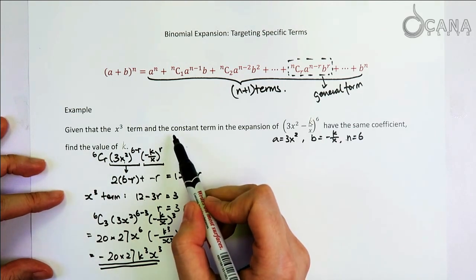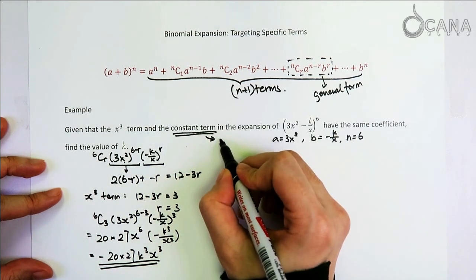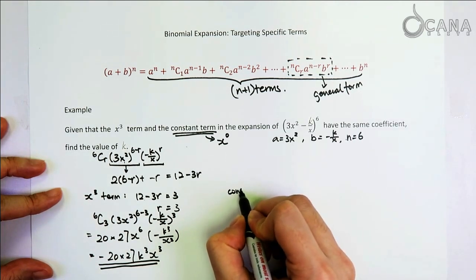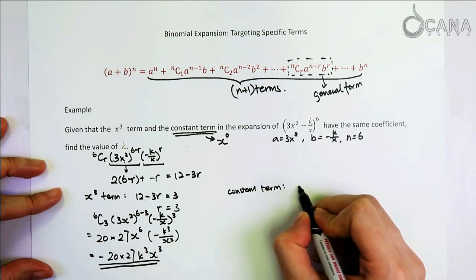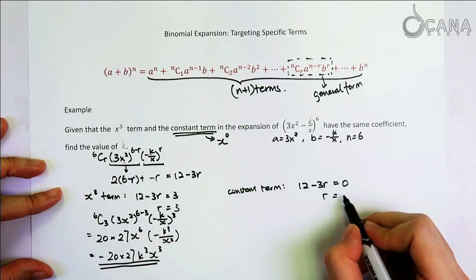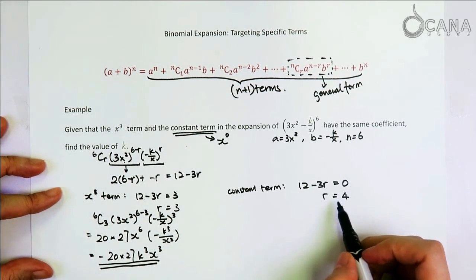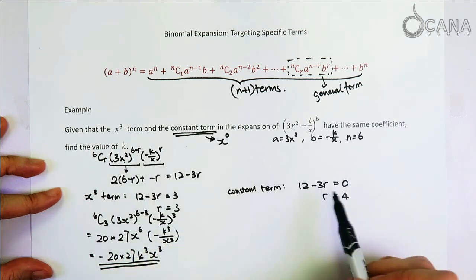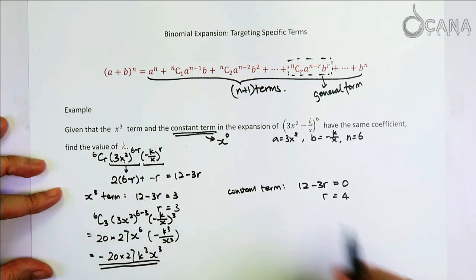And then the second term that we are concerned about is the constant term. When we say constant term, it actually means x to the power of 0. So we know that in order to find the constant term, we want the power to be 0. And that gives us r equals to 4. That means when r equals to 4, we will have a constant term from this expansion.